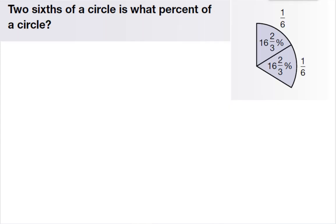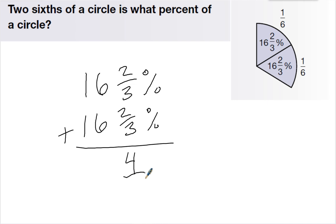2 sixths of a circle is what percent? Again, I'm going to take the percent, so 16 and 2 thirds plus 16 and 2 thirds, and add them together. 2 thirds plus 2 thirds is 4 thirds. 6 plus 6 is 12, carry my 1. 1 plus 1 plus 1 is 3.